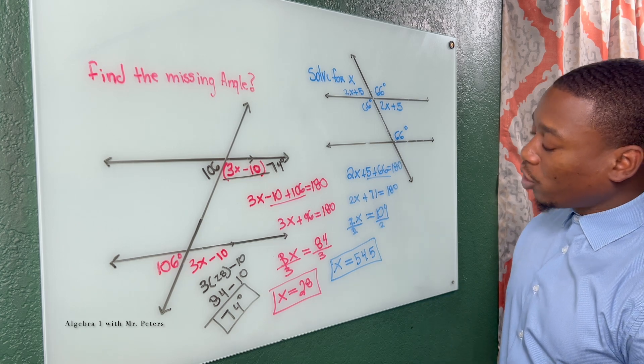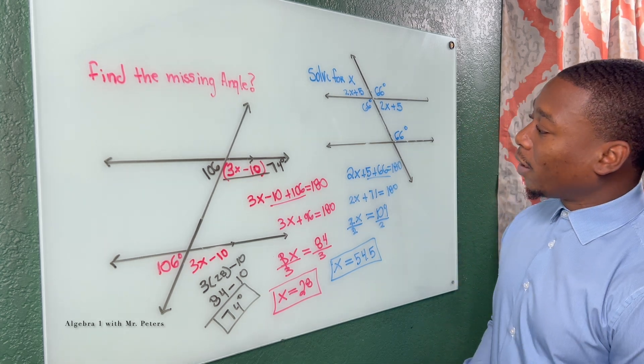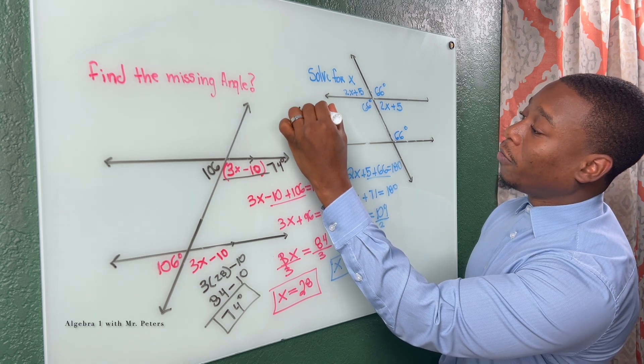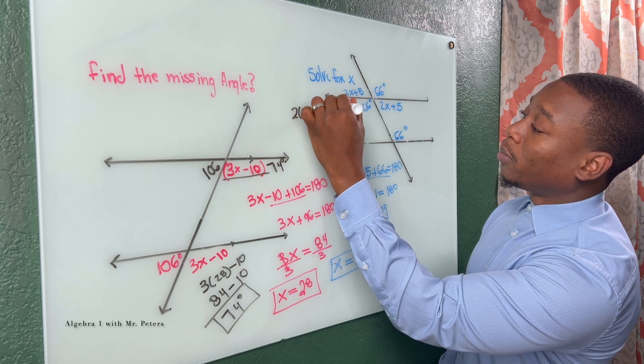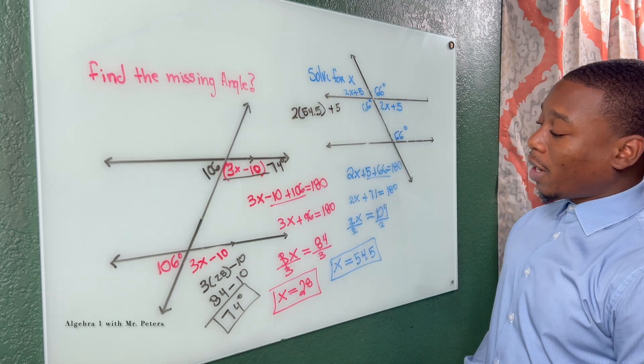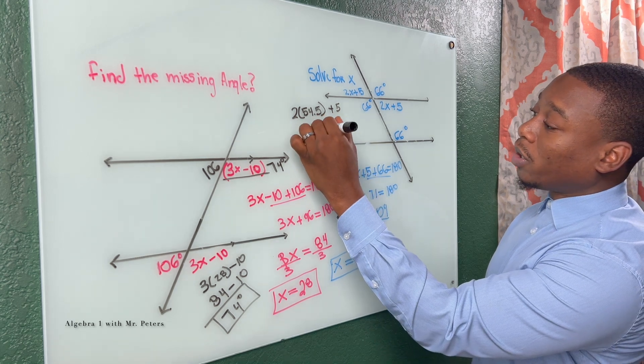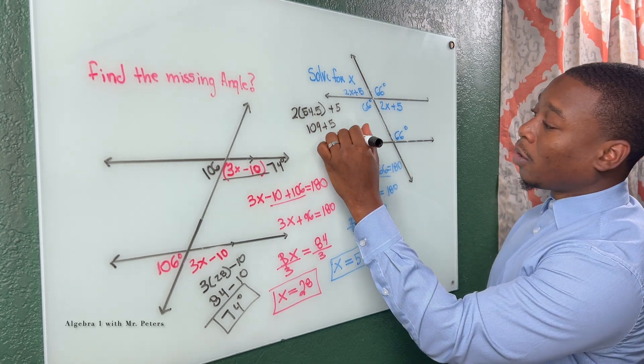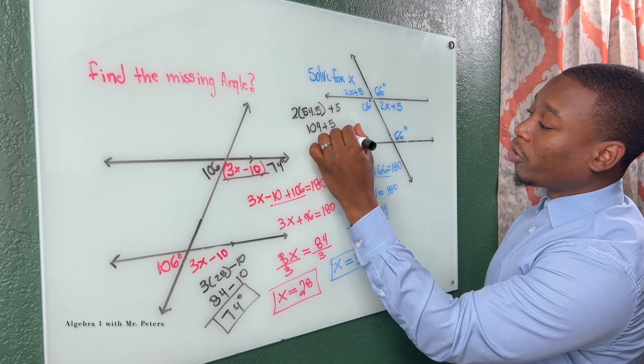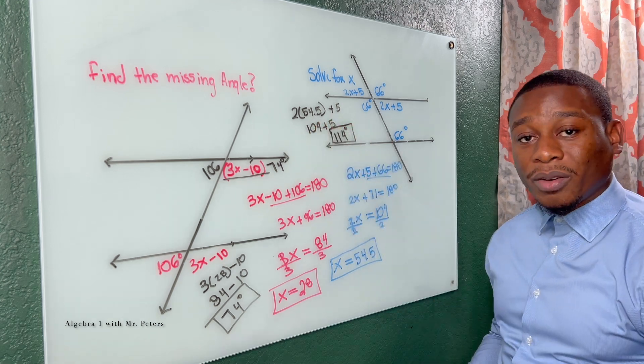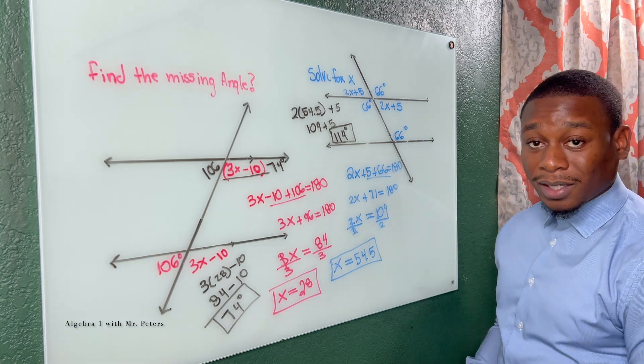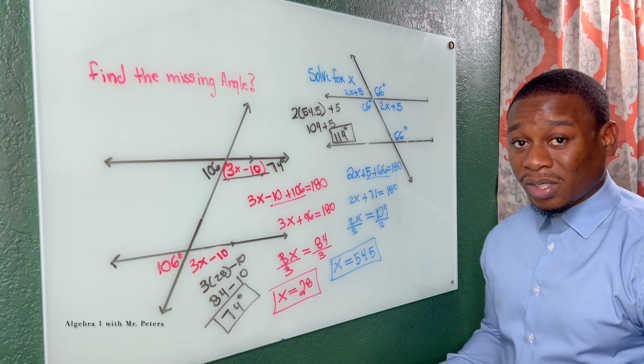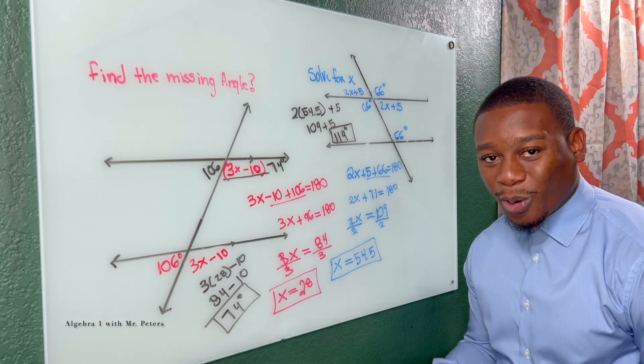So that's what x is equal to. Now for us to figure out the angle measure, let's go ahead and plug this in. So now we have 2 times 54.5 plus 5. So now what we get as a result is 109 plus 5, which is going to give us 114 degrees as a final answer. And just remember, whatever the angle measure is, once we add it to 66, it's going to give us 180. So that is another way you could use your x or use the other angle to figure out what it is.